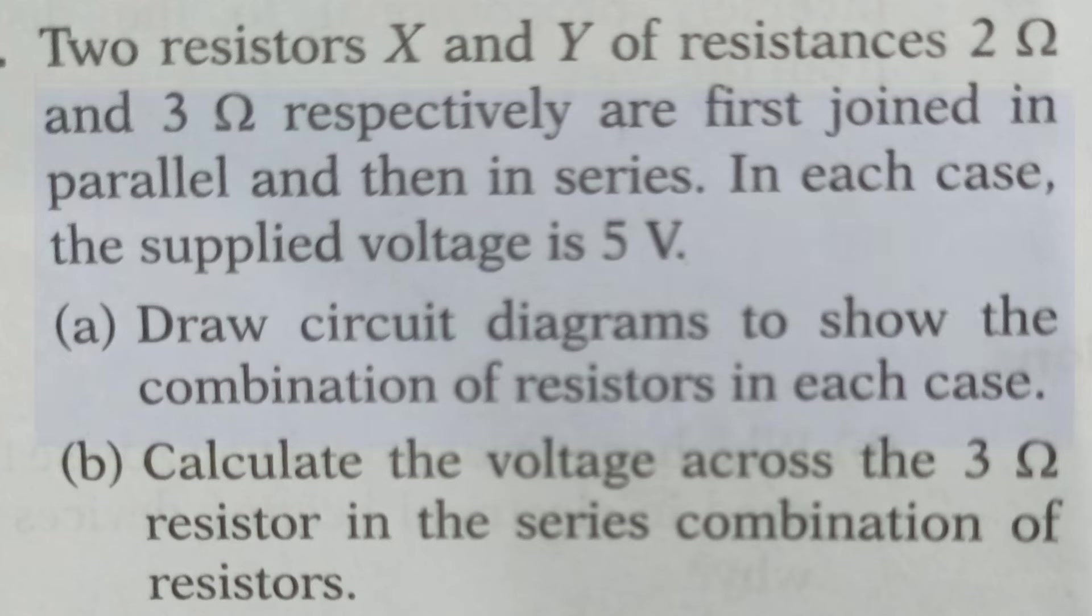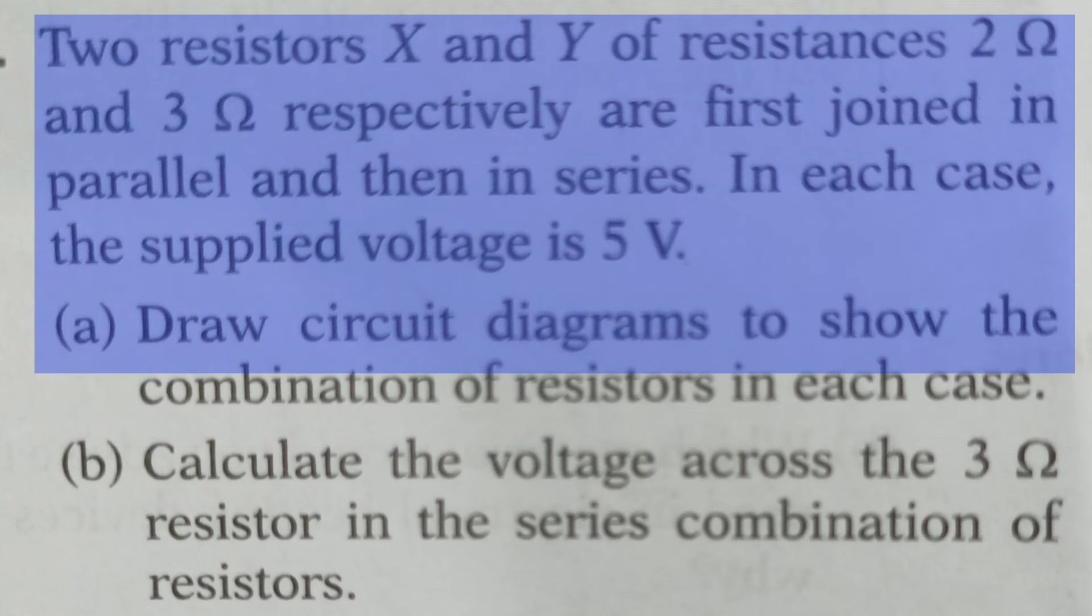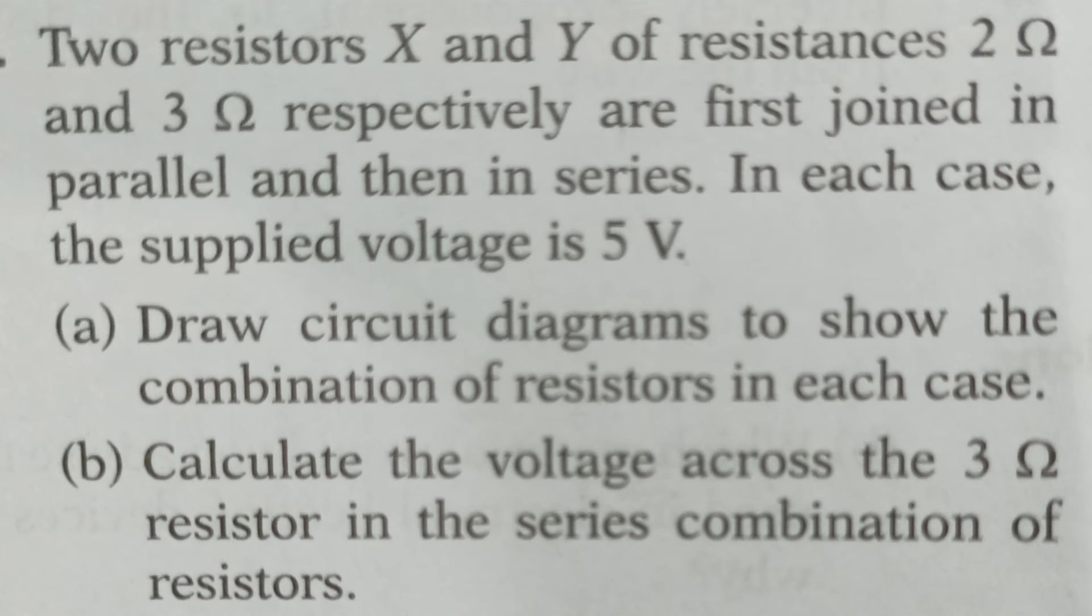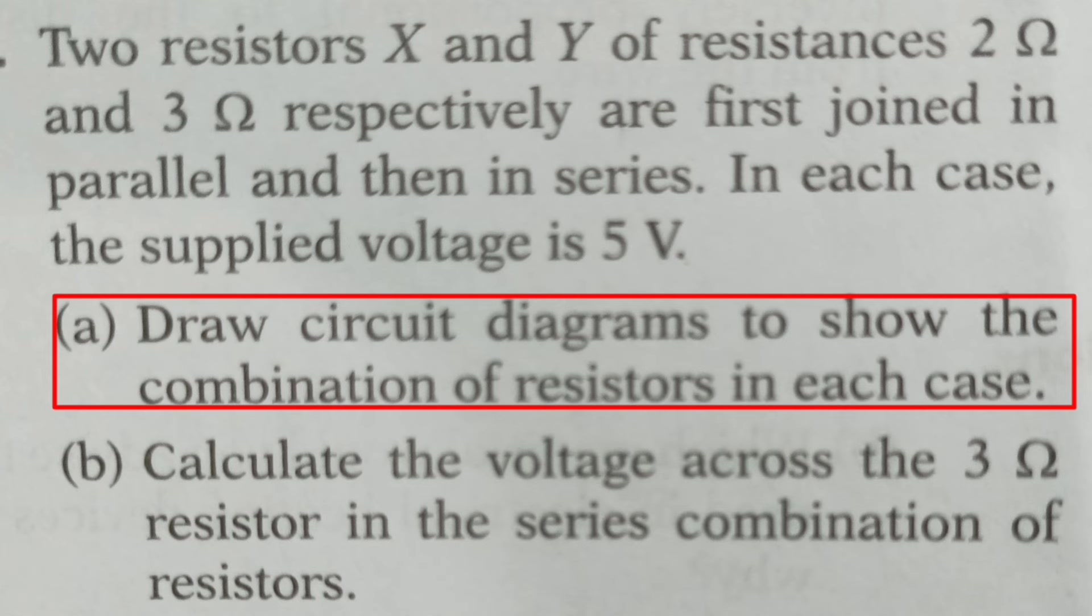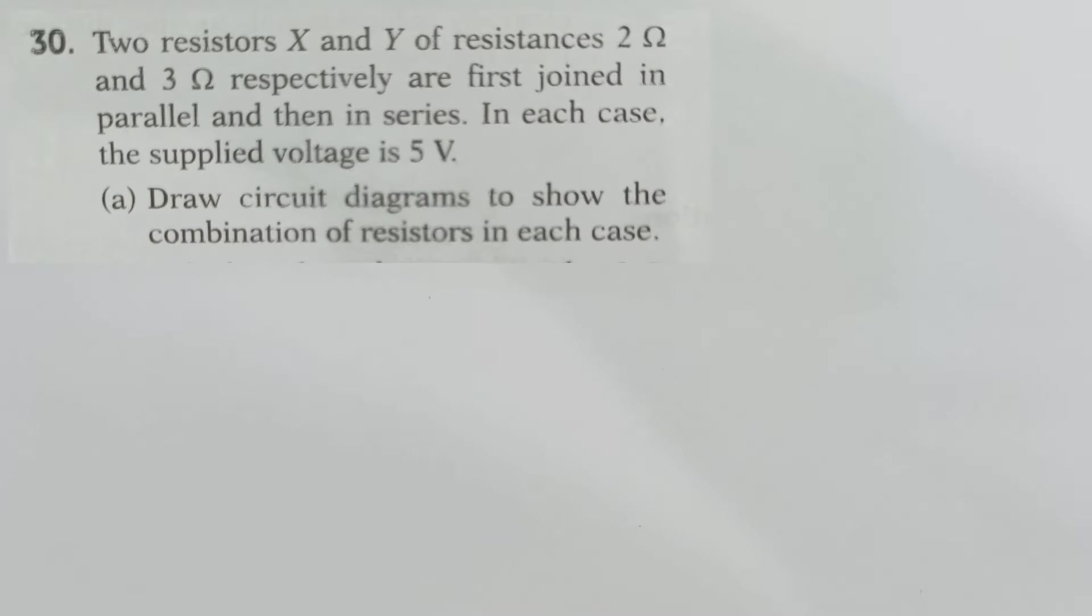X and Y resistances, one resistance is 2 ohm and the other 3 ohm, respectively are first joined in parallel and then in series. In each case, supply voltage is 5 volts. First, draw a circuit diagram to show the combination of resistors in parallel. We need a circuit diagram to show parallel order.